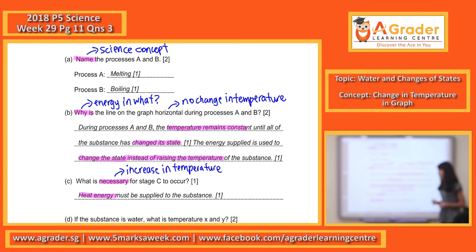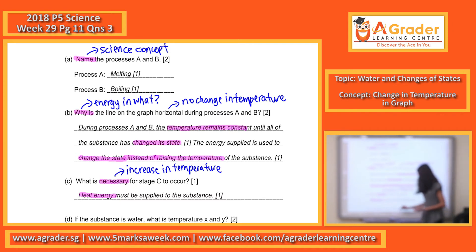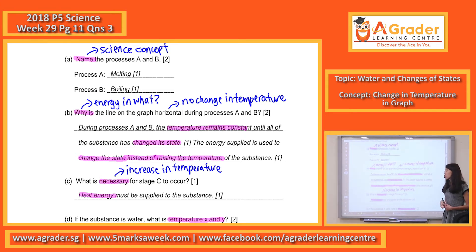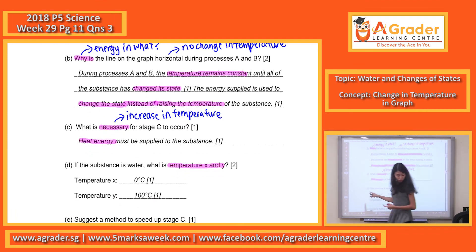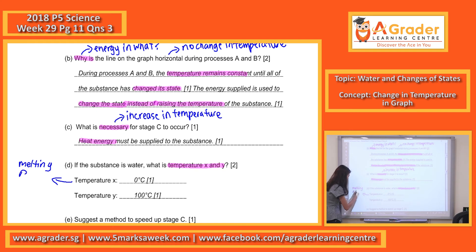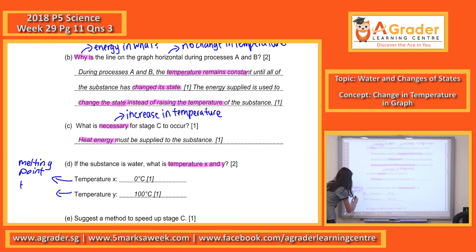Now let's look at question D. If the substance is actually water, please indicate what the temperature X and Y will be. Basically, temperature X is the melting point and temperature Y is the boiling point. Always remember for pure water — when there are no impurities — the melting point is always fixed at 0 degrees Celsius and the boiling point is fixed at 100 degrees Celsius. Temperature X is your melting point, temperature Y is your boiling point.